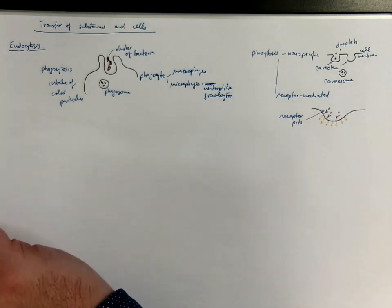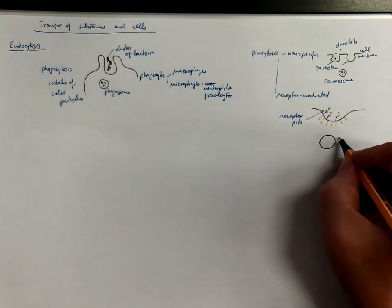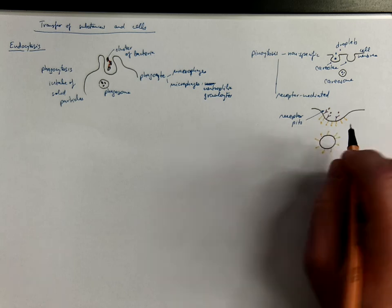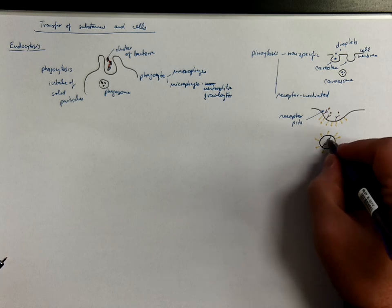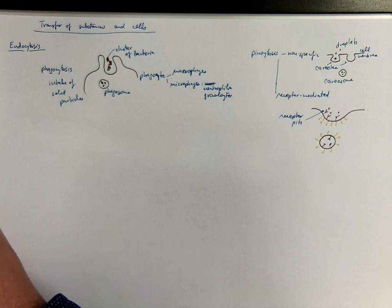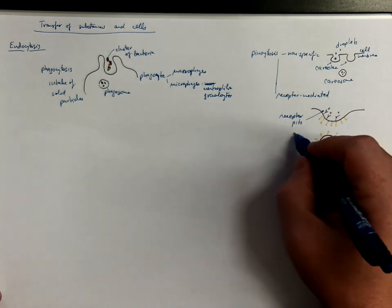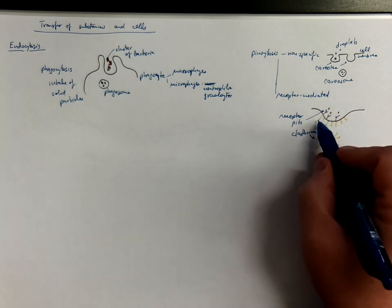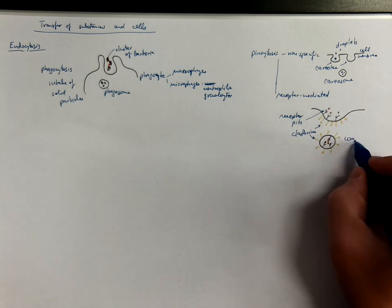A coated vesicle is formed that has the clathrins on its surface temporarily and contains the particles, the liquid droplet that have been taken in. So these are the clathrin molecules involved in the formation of these cavities, and this is a coated vesicle inside the cell.